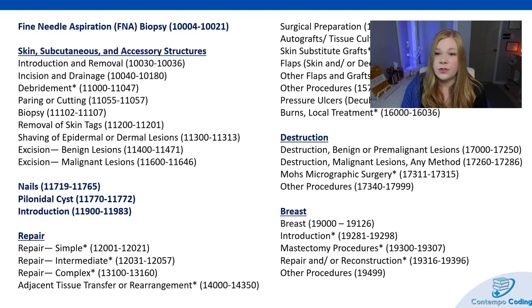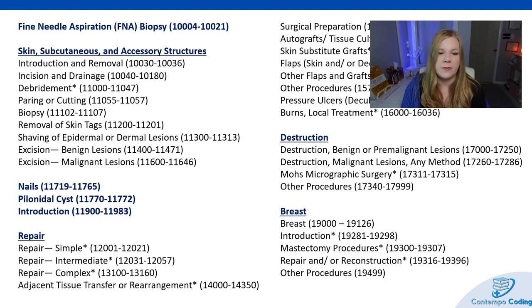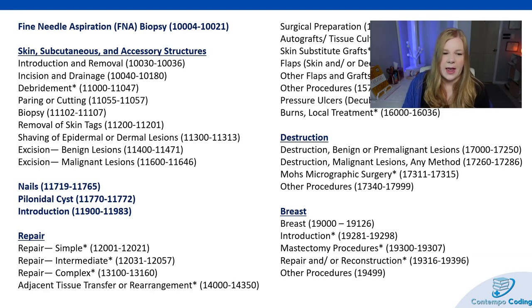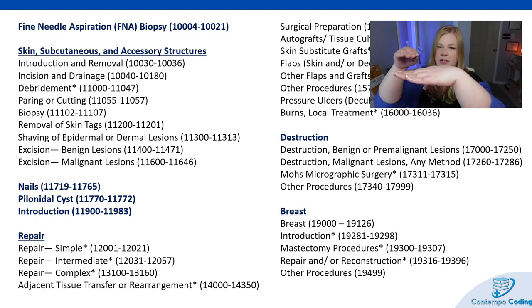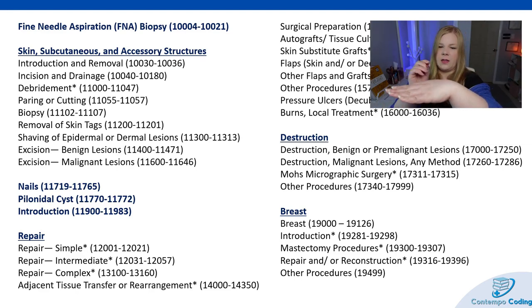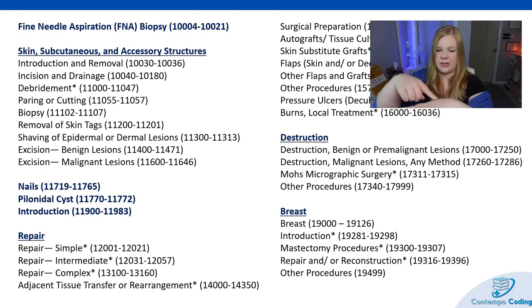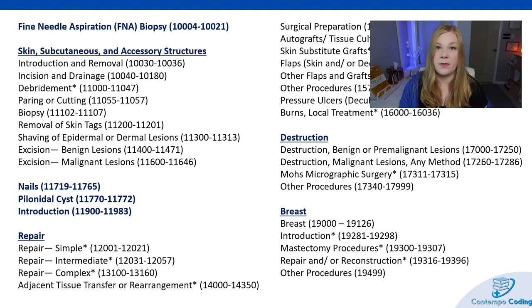Skin tag removals are coded based off of size — there's one code for up to 15, and then one for each additional 10 or part thereof. With biopsies, be careful between shave biopsies versus shaving of epidermal or dermal lesions. The shave is a horizontal slicing — they take their scalpel and shave right off the top layer of the skin without actually incising into or going into the depth of the skin.